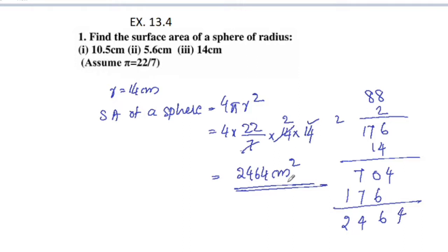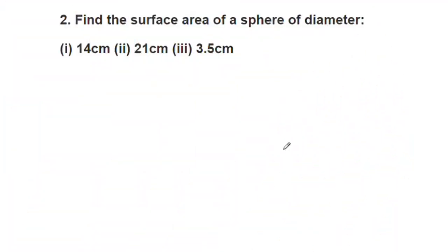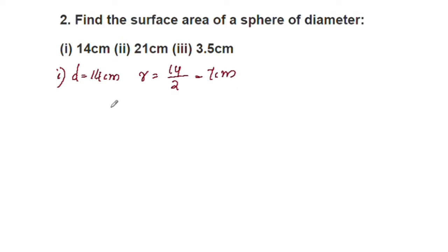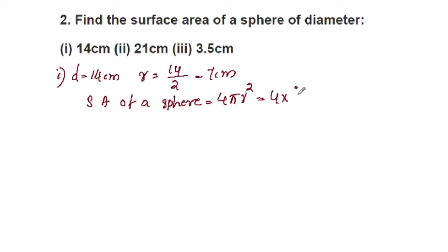Now question 2: find the surface area of a sphere of diameter 14 centimeter. Since diameter is 14 cm, radius is 14 by 2 equal to 7 centimeter. Surface area of a sphere is equal to 4 pi r squared, which is 4 into 22 by 7 into r.